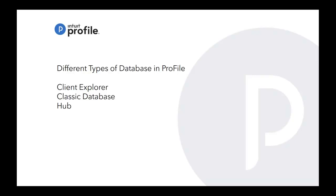As for Hub, it's a very simple one — a new database we added last year. It gives you quick functionalities like looking at your client files for 2015 and 2016. For 2017, you'll have the same functionalities available for 2015, 2016, and 2017. You'll be able to access your files, search for particular client files, and see rows showing client status for each return. Those are the three databases I'll talk about today.